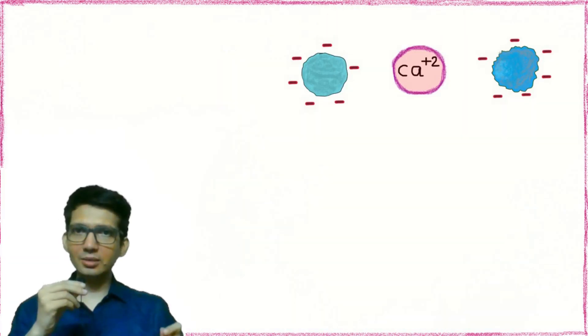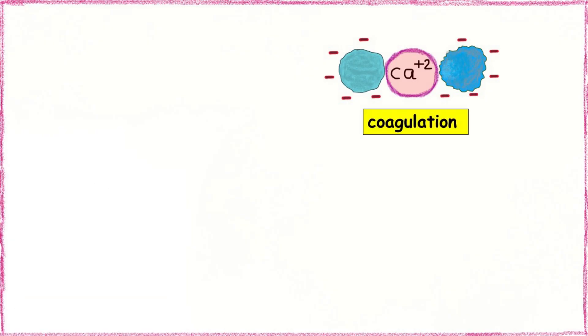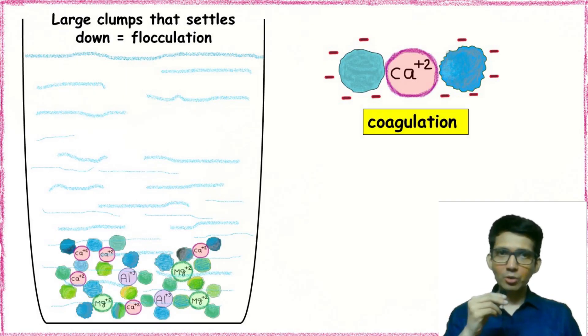Always remember this: when metal ions cause the suspended particles to come close, it is known as coagulation. And the formation of large clumps which settle down after coagulation is termed as flocculation.